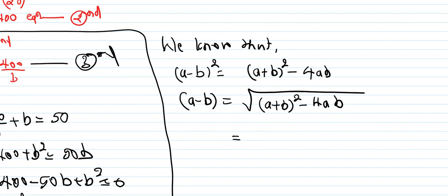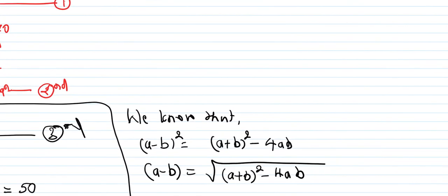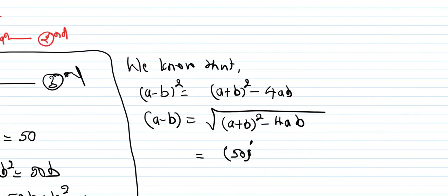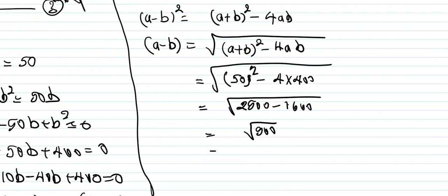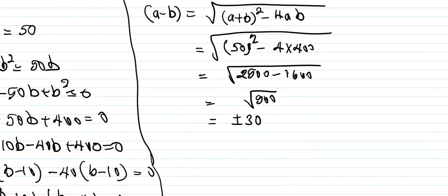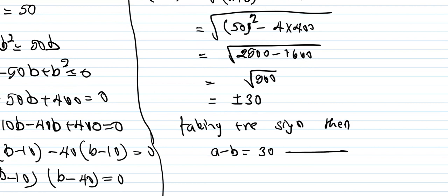To find A - B, we use (A - B)² = (A + B)² - 4AB. We know A + B = 50 and AB = 400. So (A - B)² = 50² - 4(400) = 2500 - 1600 = 900. Therefore A - B = 30. This becomes equation 3.